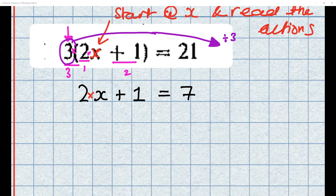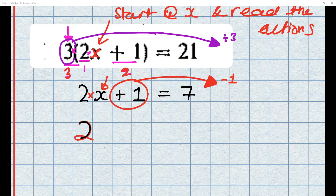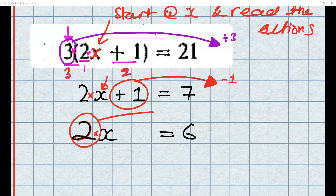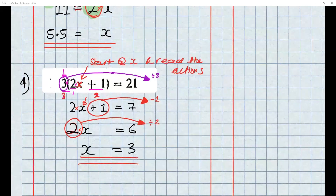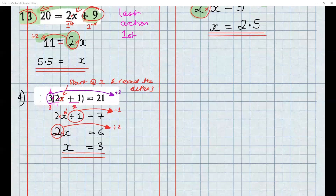We've still got to work out the value of x. Move the third action first, then which action do you move next? The second action, which is plus 1. Grab it, take it to the other side — it becomes a little baby minus 1. 7 minus 1 is 6. What's left to move? The times by 2 — opposite is a baby divide by 2. 6 divided by 2 equals 3. So x equals 3. How many steps did we do? Three steps because there were three actions.